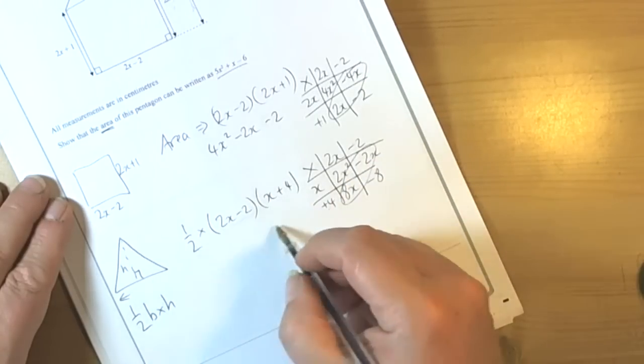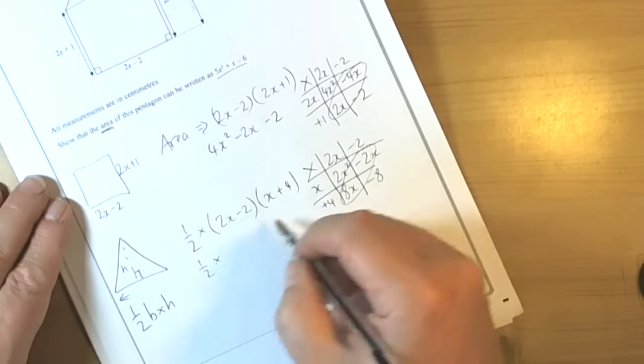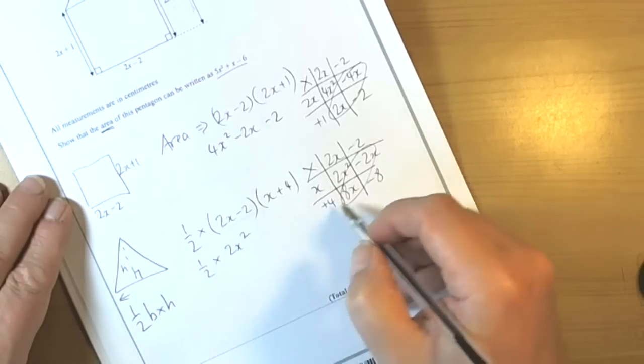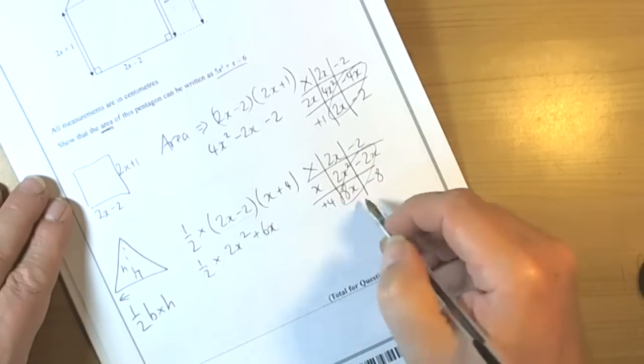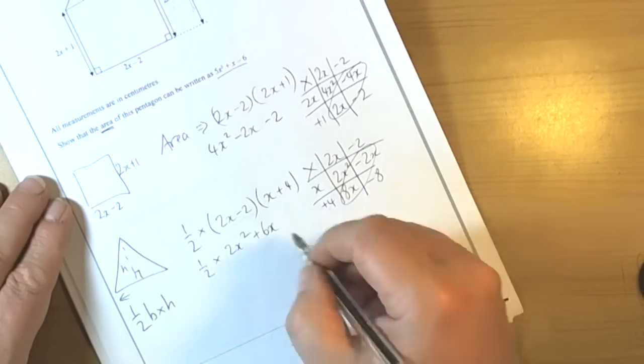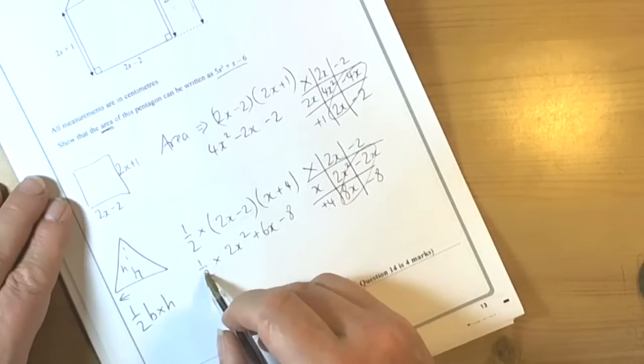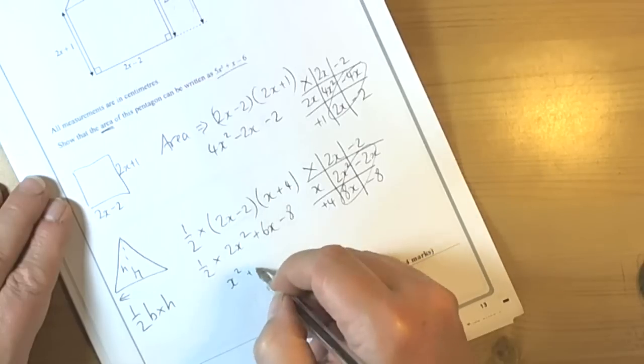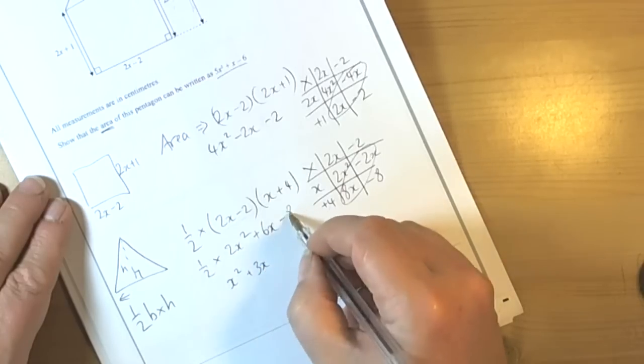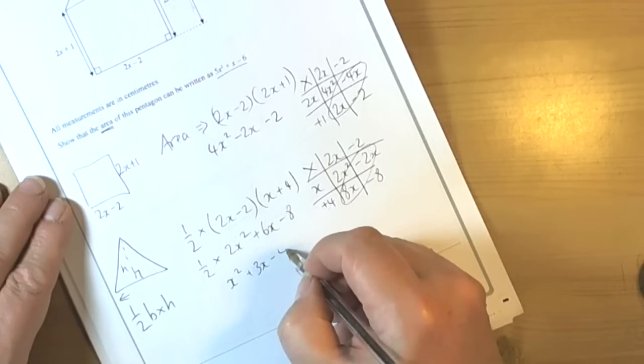So from this we've got 2x squared and we've got negative 2x plus 8x which is 6x and then we've got negative 8. But we're doing a half of each of those so finally we get half of 2x squared is x squared, half of 6x is 3x and a half of negative 8 or take away 8 is negative 4.